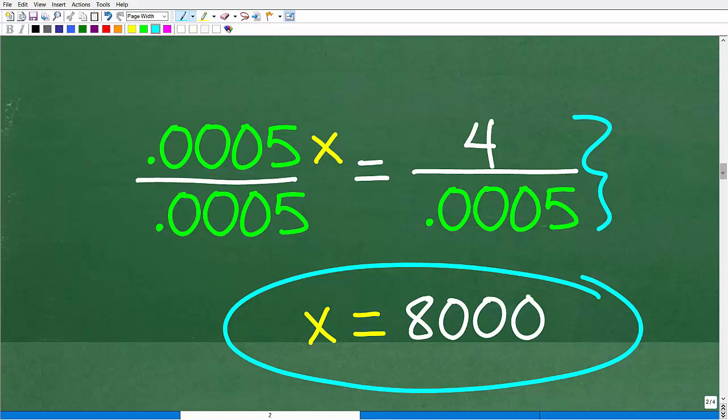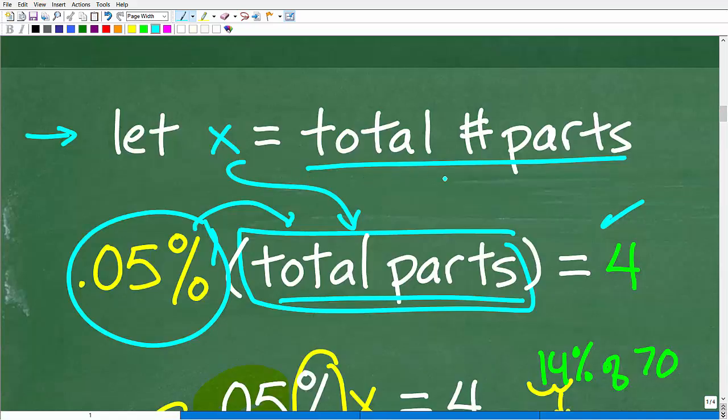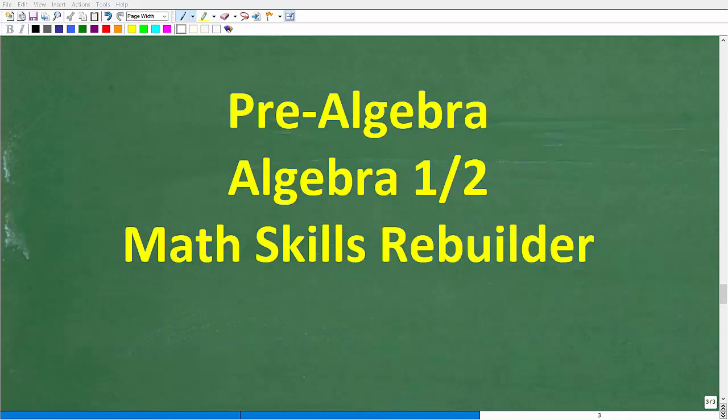Remember, you've got to always check your variables, which you've established them as. So, x equals the total number of parts. So, obviously, Jay examined 8,000 parts.